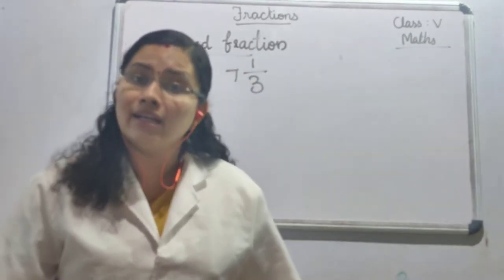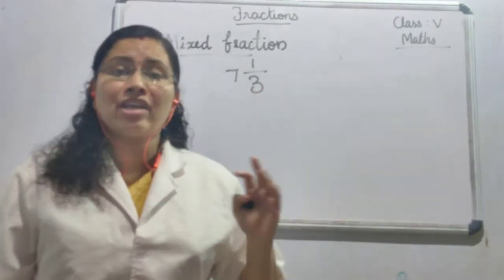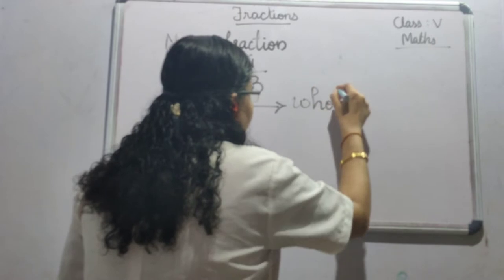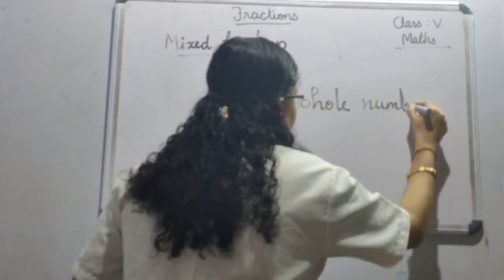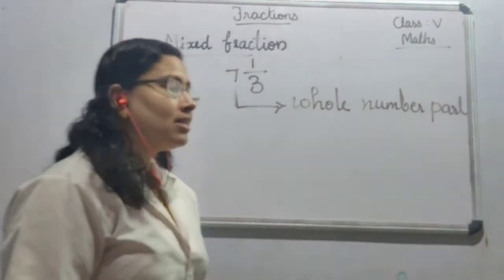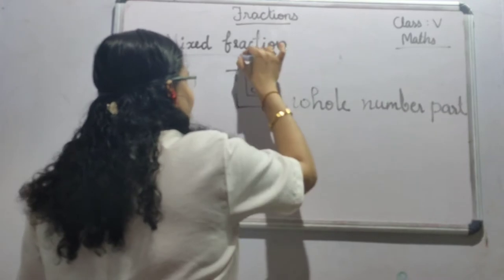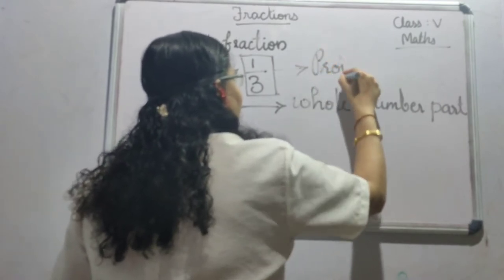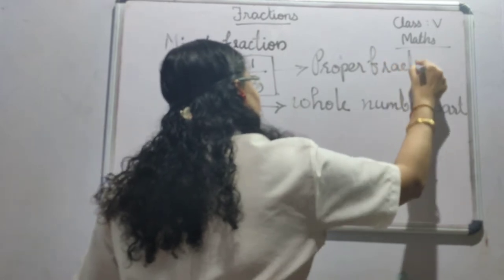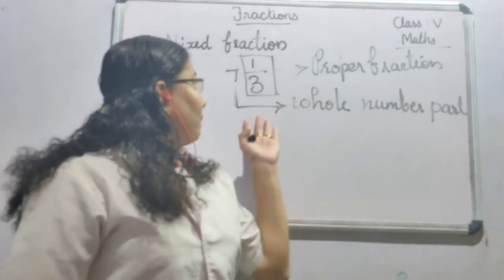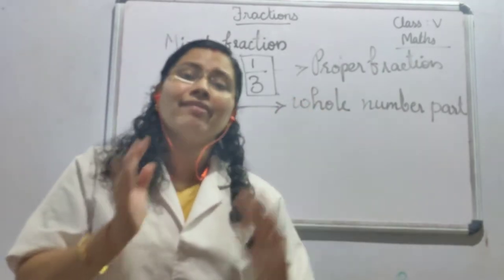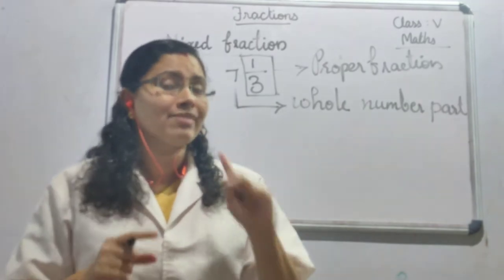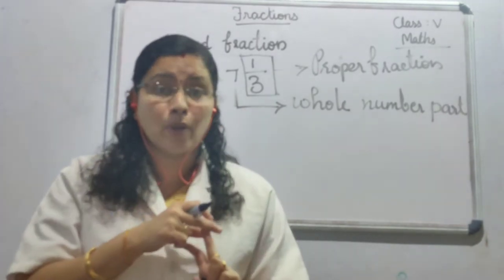As you all know, 7 is a whole number. So this mixed fraction has two parts. One is a whole number part, and the other is in the form of a proper fraction. So a mixed fraction means it has a whole number part and a proper fraction part. A mixed fraction consists of two parts: a whole number part and a proper fraction part.